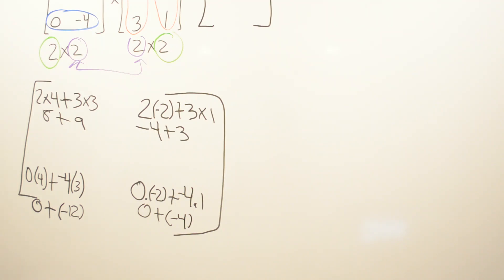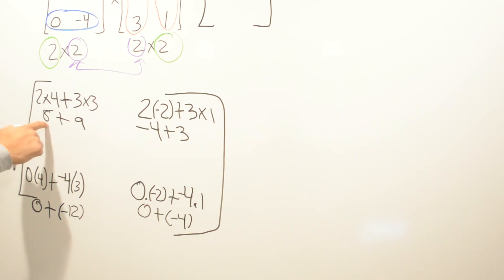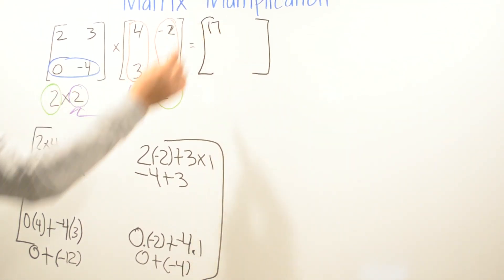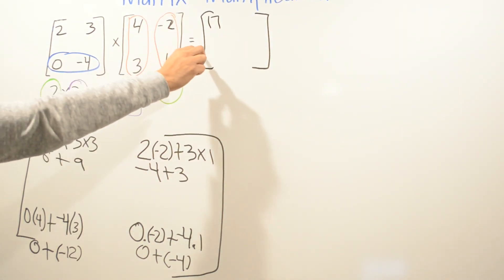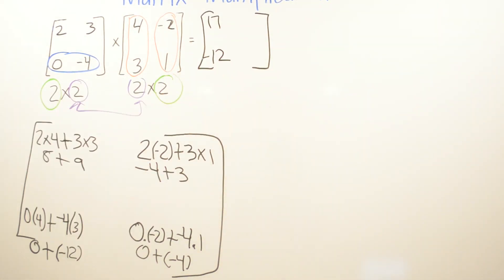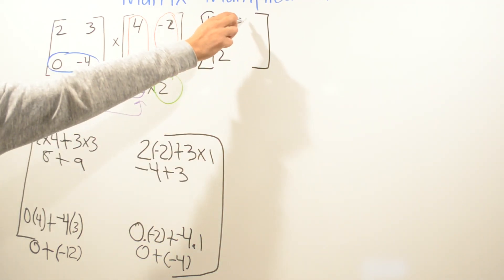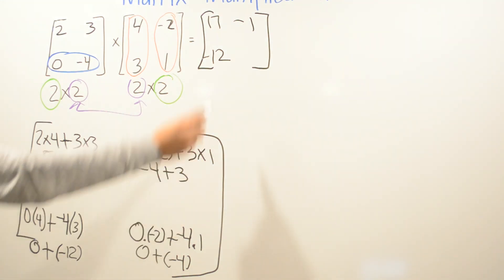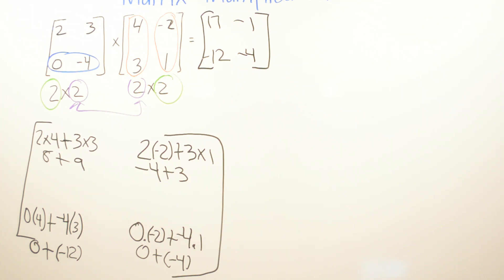Now we add the numbers and place them in the matrix. 8 plus 9 is 17 in this corner. On the bottom, 0 plus negative 12 is negative 12. Then negative 4 plus 3 is negative 1. And 0 plus negative 4 is negative 4.